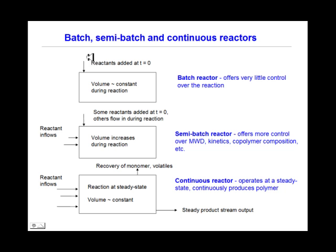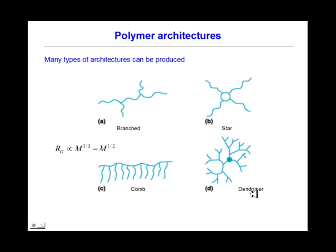All these reactions can be done in batch, semi-batch, or continuous reactors. The table in this slide shows differences among these types. The batch reactor offers very little control over the reaction and the volume is constant during the reaction. In the semi-batch reactor, more control is allowed by different flow schemes. In the continuous reactor, steady state is achieved and polymer is continuously produced, with constant volume.